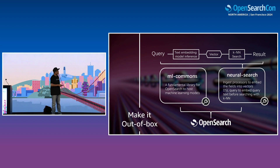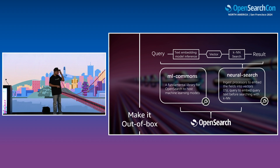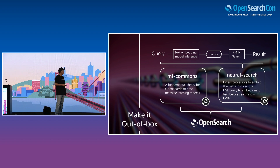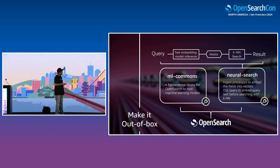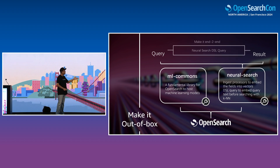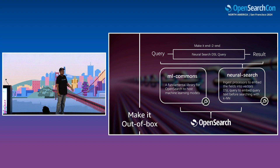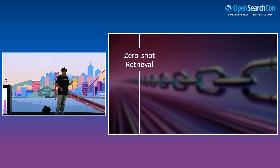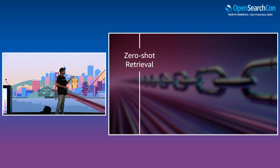With Neural Search it is end-to-end — you just write a DSL query, and you can query by text and get results in text, with everything in the middle handled by OpenSearch. This is what we call out-of-box. From a scientific view, we also need to make those models out-of-box — that's called zero-shot retrieval. We have scientists in OpenSearch working on bringing you zero-shot retrieval.